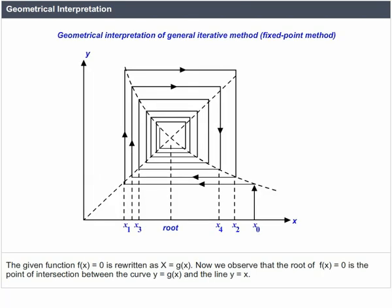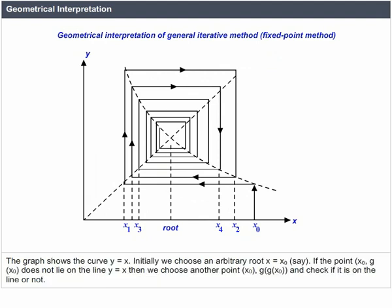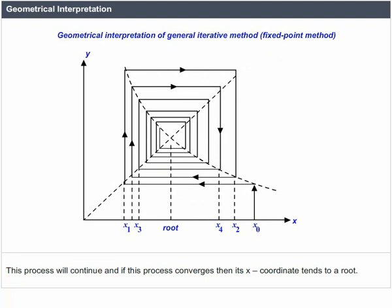Geometrical Interpretation. The given function f(x) = 0 is rewritten as x = g(x). The root of f(x) = 0 is the point of intersection between the curve y = g(x) and the line y = x. Initially we choose an arbitrary root x = x0. If the point (x0, g(x0)) does not lie on the line y = x, we choose another point and check. This process continues; if it converges, the x-coordinate tends to a root.